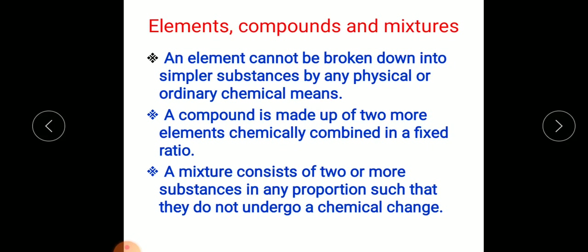So an element is a simpler substance which cannot be broken down by any physical or chemical means. Whereas a compound is made up of two or more elements chemically combined in a fixed ratio.